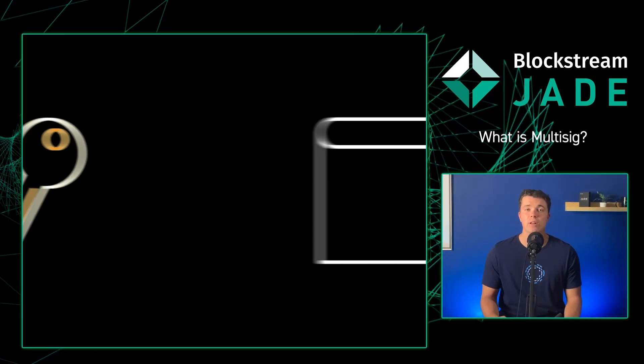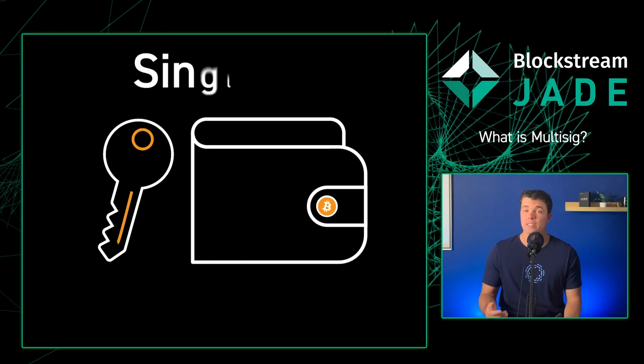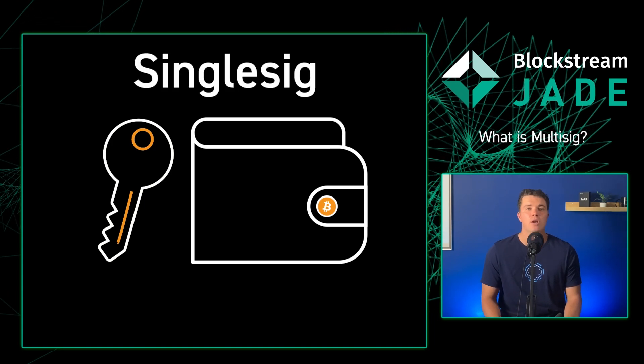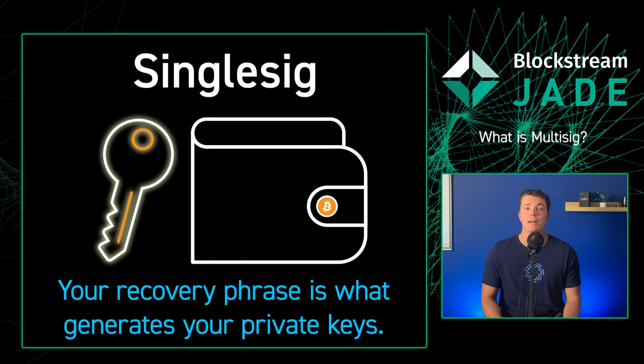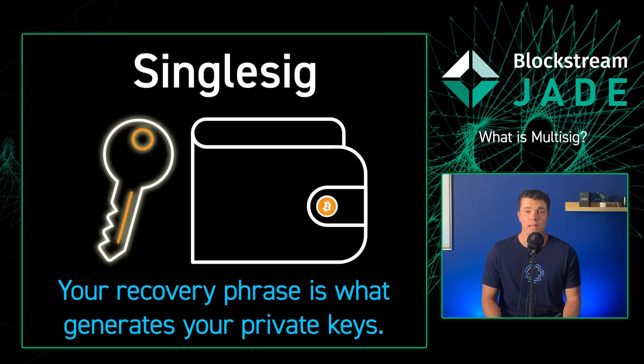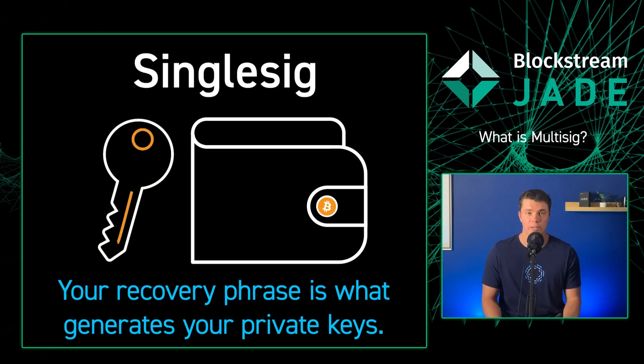In a traditional single-key Bitcoin wallet, also known as single-sig, you have one private key that corresponds to one public key, which is linked to a unique Bitcoin address.